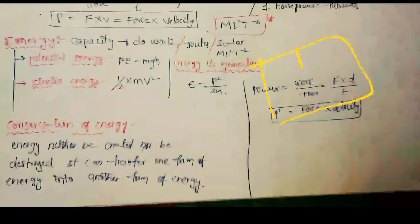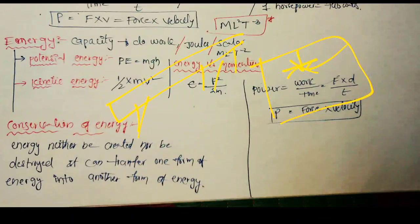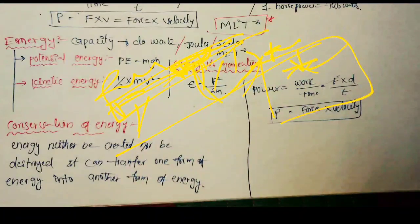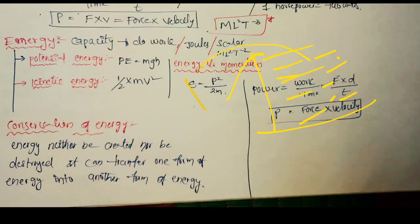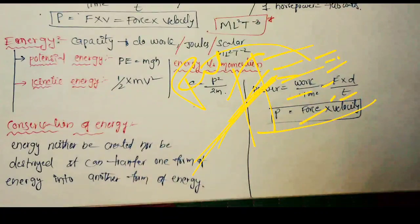For example, if you have a fan at height, you have potential energy. If you have flyovers, you have potential energy. For example, if there is a dam, water is stored in it — that water has potential energy. This potential energy is due to the position of the body.